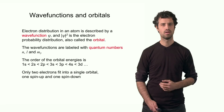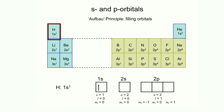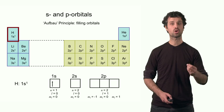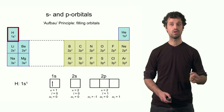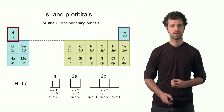Let's take this set of rules and apply it to the first few elements of the periodic table. The first element is hydrogen, which contains a proton nucleus and a single electron. The Aufbau principle states that the electron goes into the orbital with the lowest energy — the 1s orbital. The electron configuration of hydrogen is 1s¹.